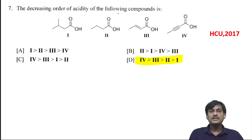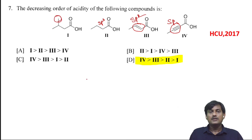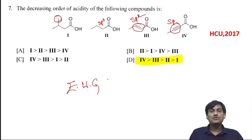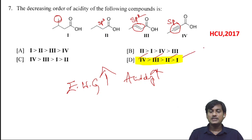The decreasing order of acidity (pKa) of the following compounds: one compound is sp hybridized and more electronegative, another is sp2 hybridized, another is sp3 hybridized, and one has introduction of a methyl group. As the number of electron donating groups increases, acidity decreases; acidity is directly proportional to electron withdrawing nature. So the order is: fourth > third > second > first (least acidic).